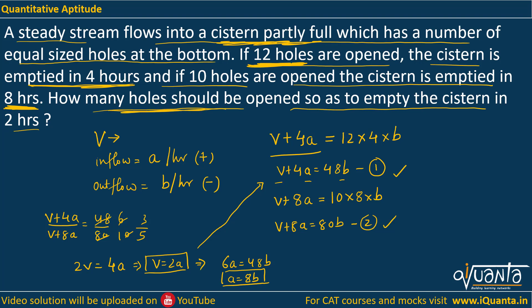Now we need to find out how many holes should be opened to empty the cistern in 2 hours. The inflow pipe is working for 2 hours, so V was already present, plus for 2 hours there will be an inflow so that volume added will be plus 2a. We need to find out the number of holes at the bottom, so let us assume there are x holes, the outflow of every hole is b, so x into b into 2 hours.